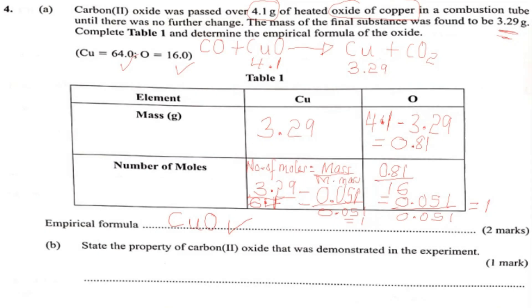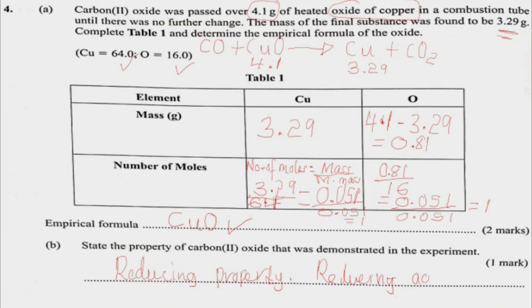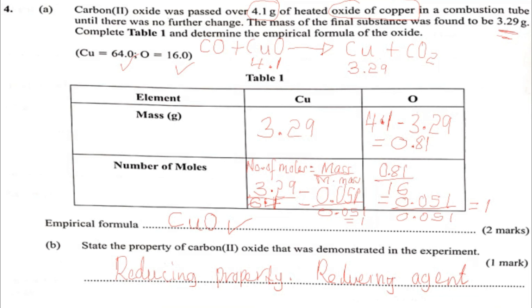Now, state the property of copper 2 oxide that was demonstrated in this experiment. The property is: copper 2 oxide acts as an oxidizing agent — it is a substance that causes another substance to undergo oxidation. From the equation, carbon (CO) undergoes oxidation — that is, addition of oxygen — going from CO to CO2. So CO is the reducing agent, and copper 2 oxide is the oxidizing agent.